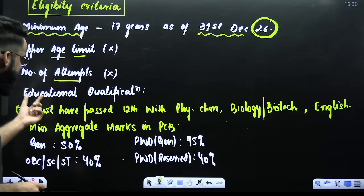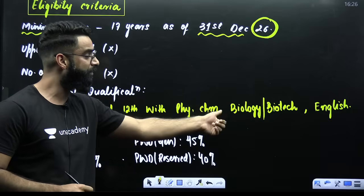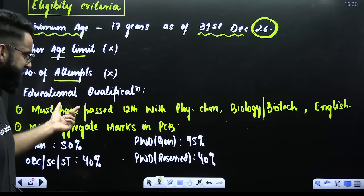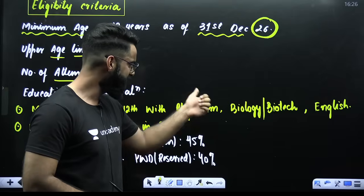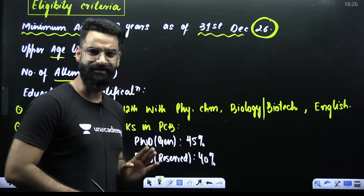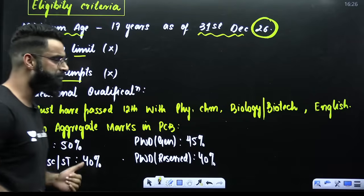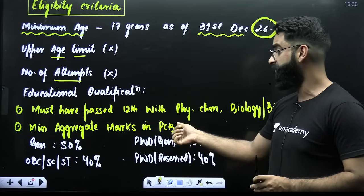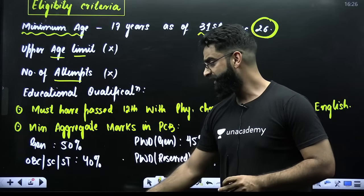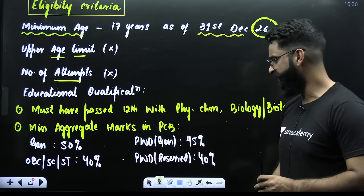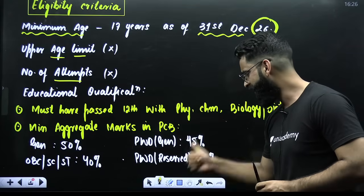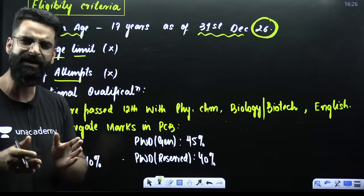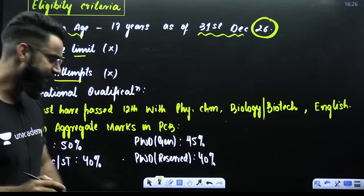Regarding educational qualification, you must have passed 12th with Physics, Chemistry, Biology or Biotech, and English. What is the minimum aggregate marks in PCB? In the general category, the minimum aggregate marks in Physics, Chemistry, Biology or Biotech should be 50%. In OBC, SC or ST it has to be 40% minimum. For PWD general it has to be 45%, and PWD reserved it is 40%.